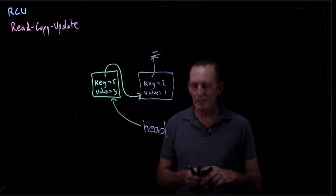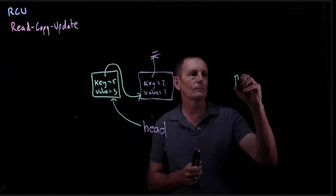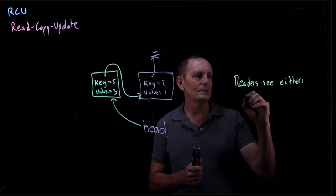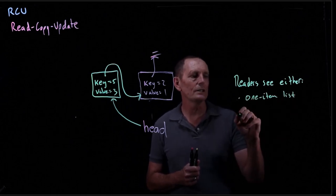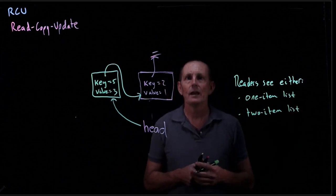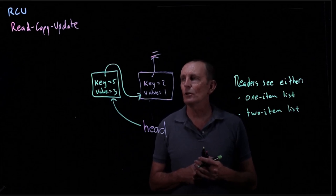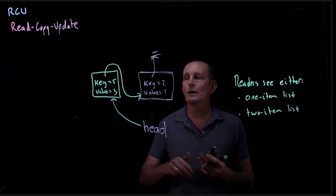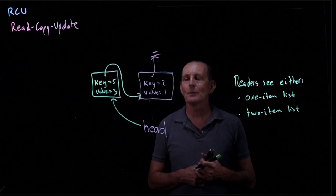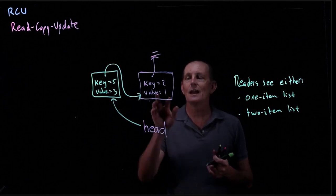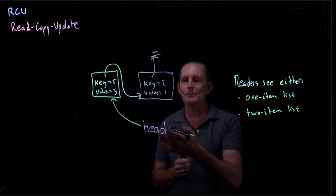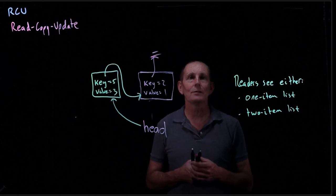The readers are going to always see one of two things: either a one-item list or a two-item list, and this is okay. After we have modified head, any new readers that come along will clearly see a two-item list. Any readers that came along before we changed the head are going to see a one-item list. So does that mean that after we change head, all readers are seeing a two-item list? No.